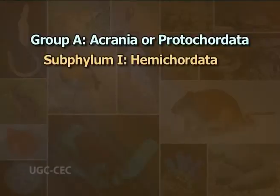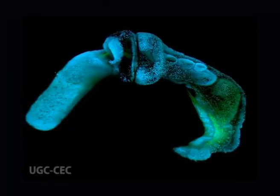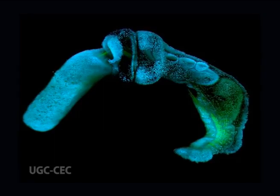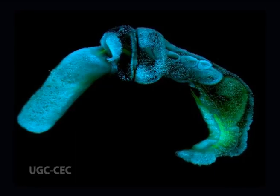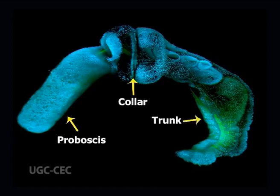Sub-phylum 1: Hemichordata — in Greek, hemi means half and chord means chord. These are solitary and colonial, mostly tubiculous and exclusively marine animals. Body is soft, fragile, vermiform and divisible into proboscis, collar and trunk. Coelom is enterocoelous. Buccal diverticulum, earlier considered as notochord, is present in the proboscis. Gill slits, when present, are paired and one to numerous.